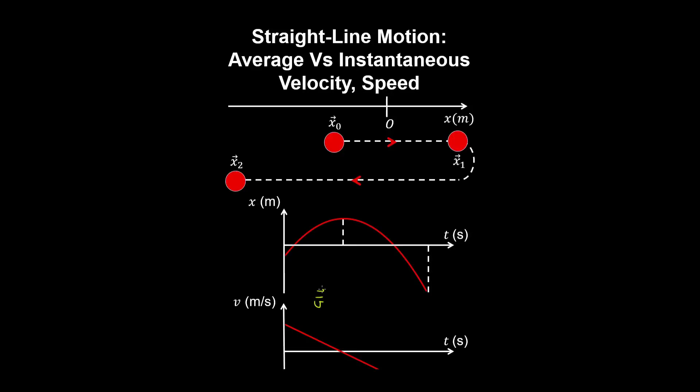We can define the average velocity as the change in position or displacement over the change in time, and that can be seen between two points on the position-time curve.